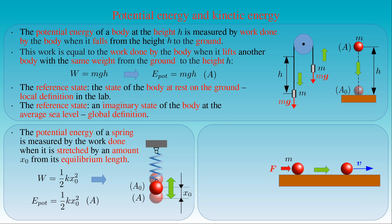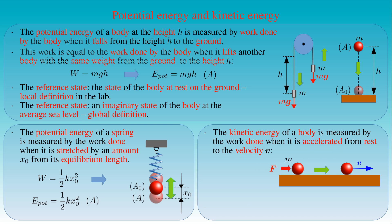A moving body is also able to do work due to its velocity, representing another form of energy called the kinetic energy of the body. We already determined the work done when a body of mass M at rest is accelerated to the speed V, which is equal to 1/2 times the mass M times the square of its instantaneous velocity V. Here the reference state A0 of the body is the state when it is at rest. This work can be used to measure the kinetic energy of the body in a state A when it moves at speed V — that is, the kinetic energy of the body is equal to ½ M V squared. The potential energy and the kinetic energy are the two different forms of mechanical energy possessed by an object due to its position or due to its motion.